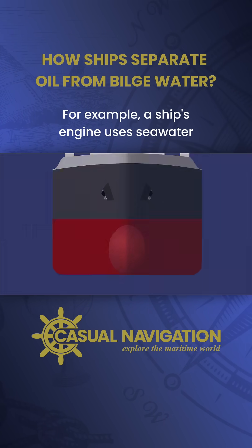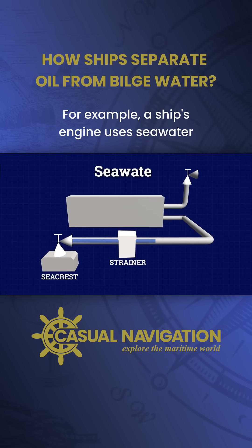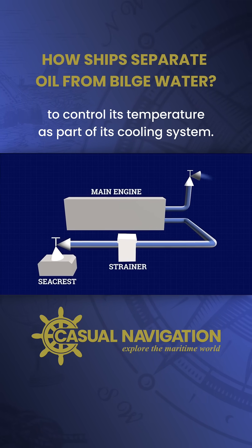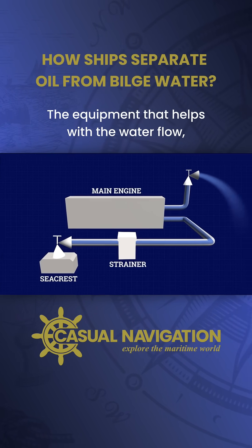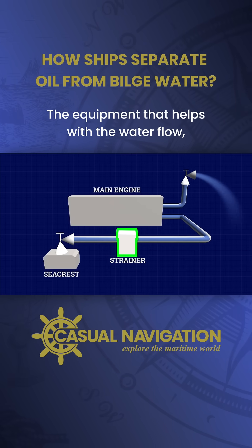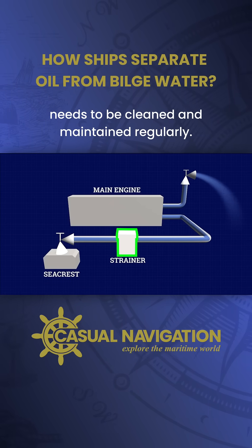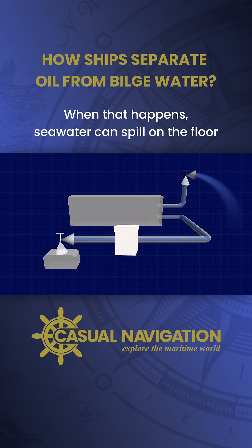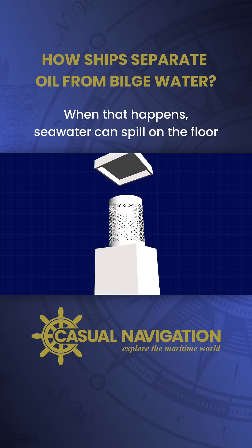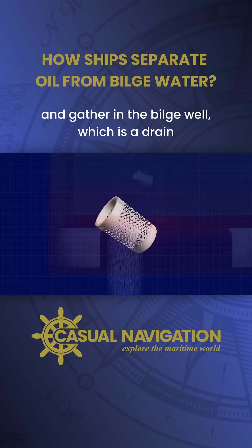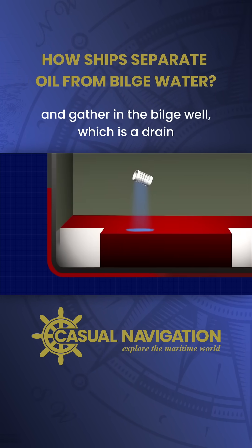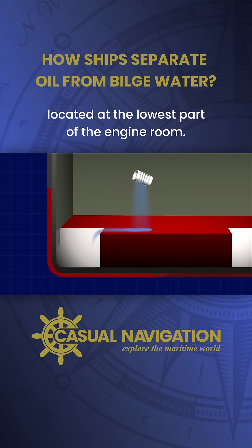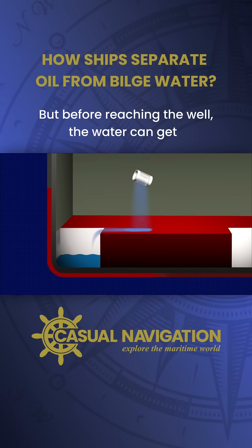For example, a ship's engine uses sea water to control its temperature as part of its cooling system. The equipment that helps with the water flow needs to be cleaned and maintained regularly. When that happens, sea water can spill on the floor and gather in the bilge well, which is a drain located at the lowest part of the engine room.